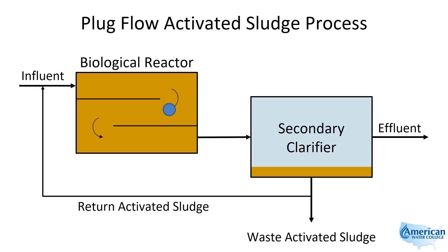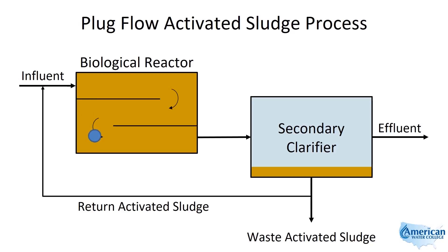This type of system is normally at least 10 times longer than it is wide. The organic load and the dissolved oxygen uptake is very high at the reactor inlet, and the aeration system must be able to transfer sufficient oxygen at this point, and then can be tapered off as the water moves through the reactor. This design provides the highest BOD removal rate per unit volume, as well as being less susceptible to sludge bulking caused by filamentous bacteria than other designs, assuming there is sufficient dissolved oxygen at the front end of the reactor.